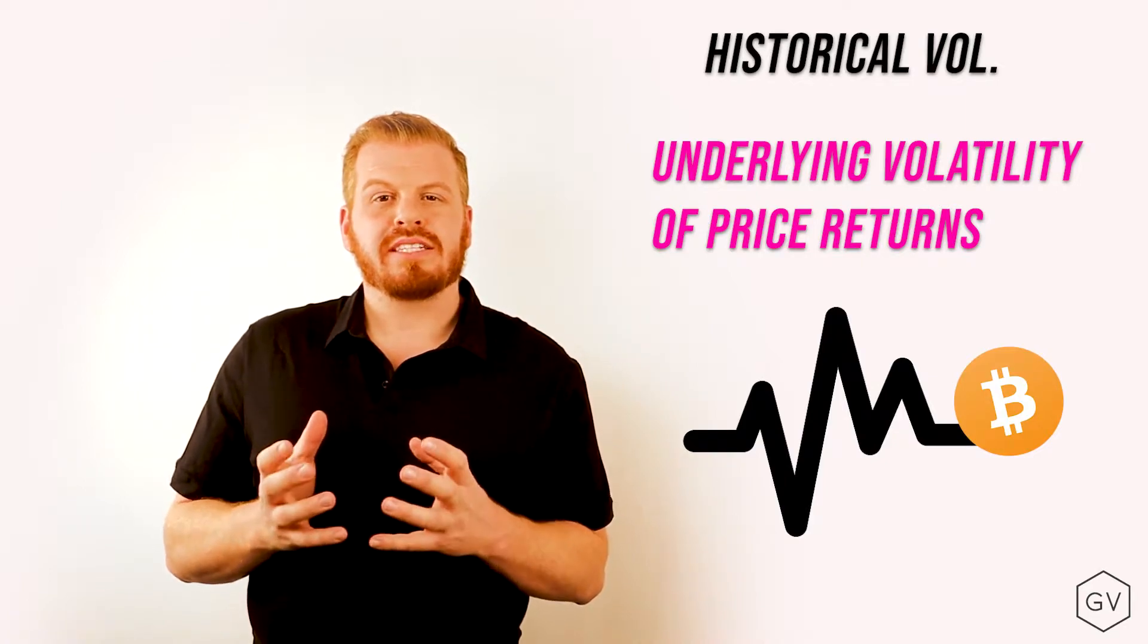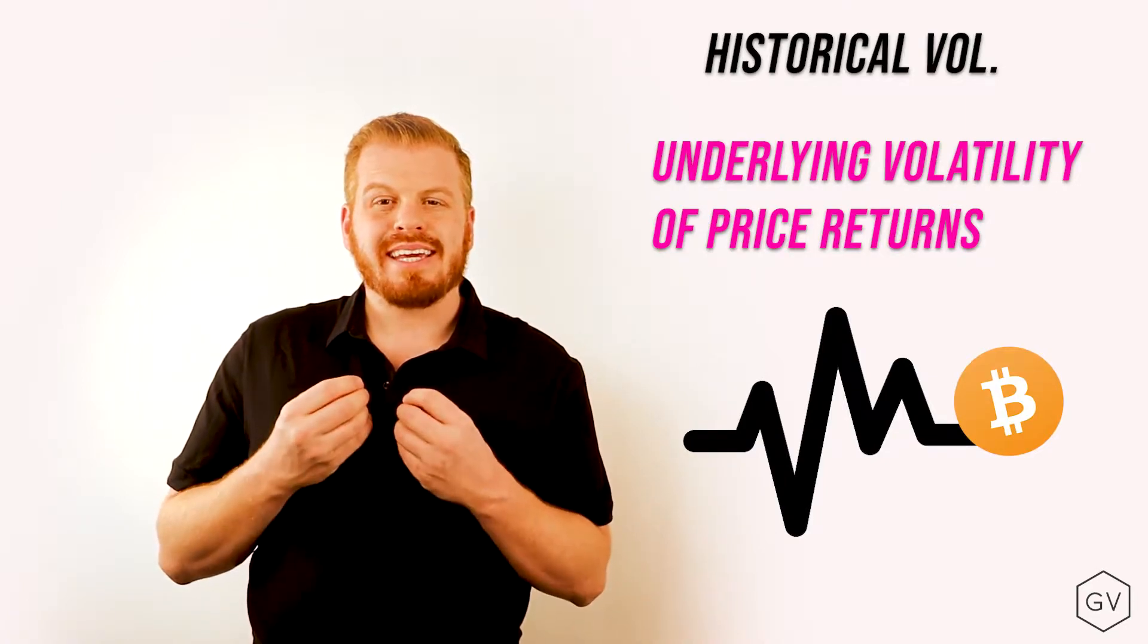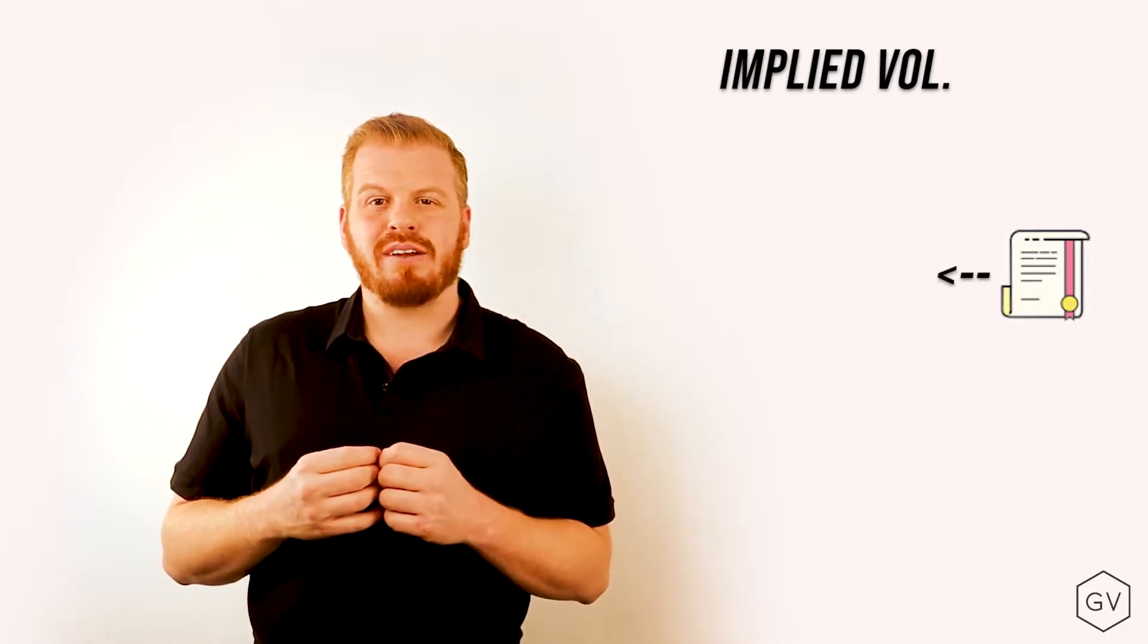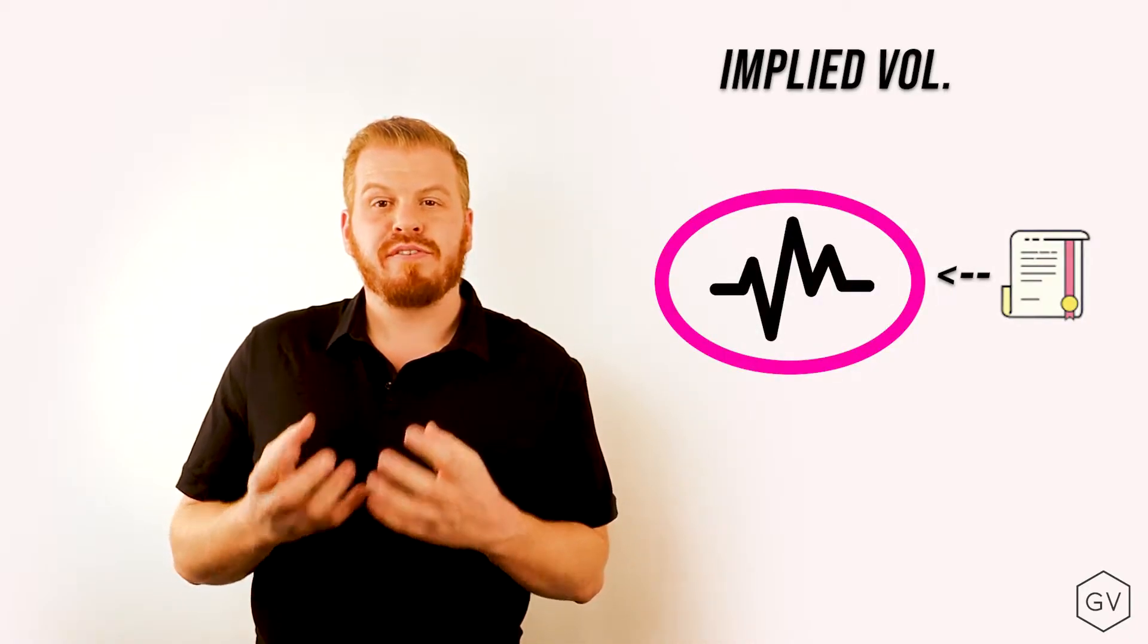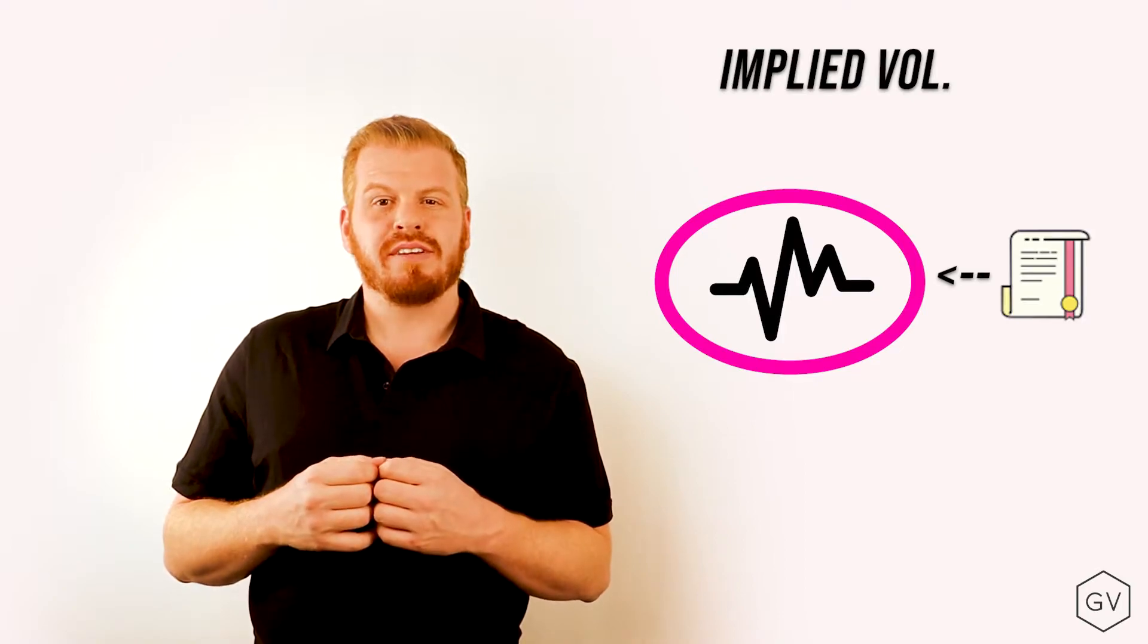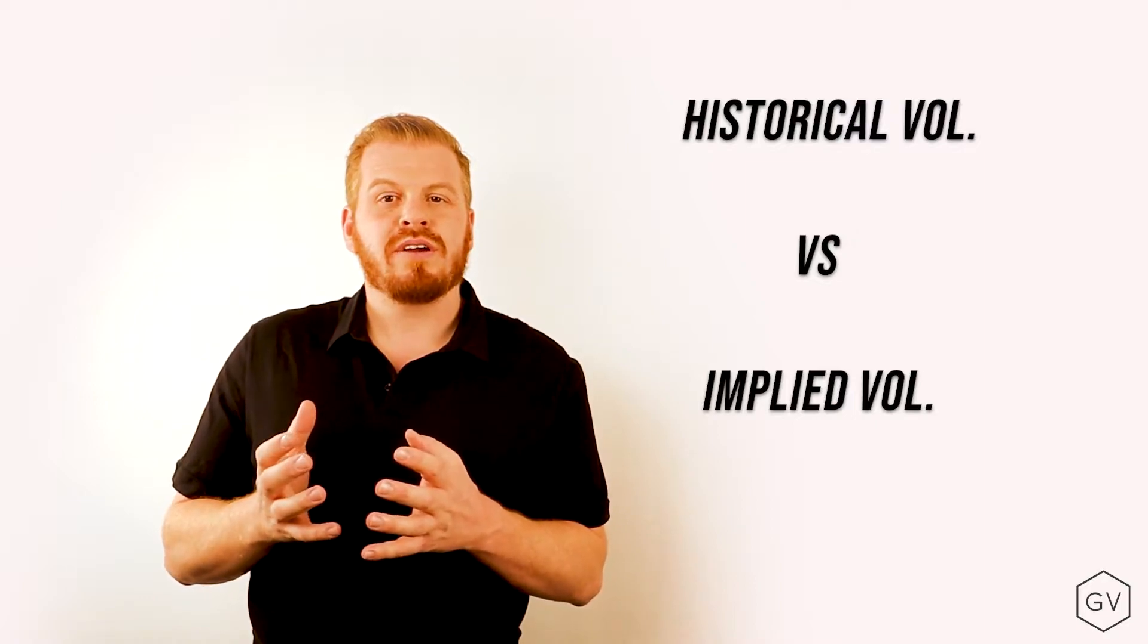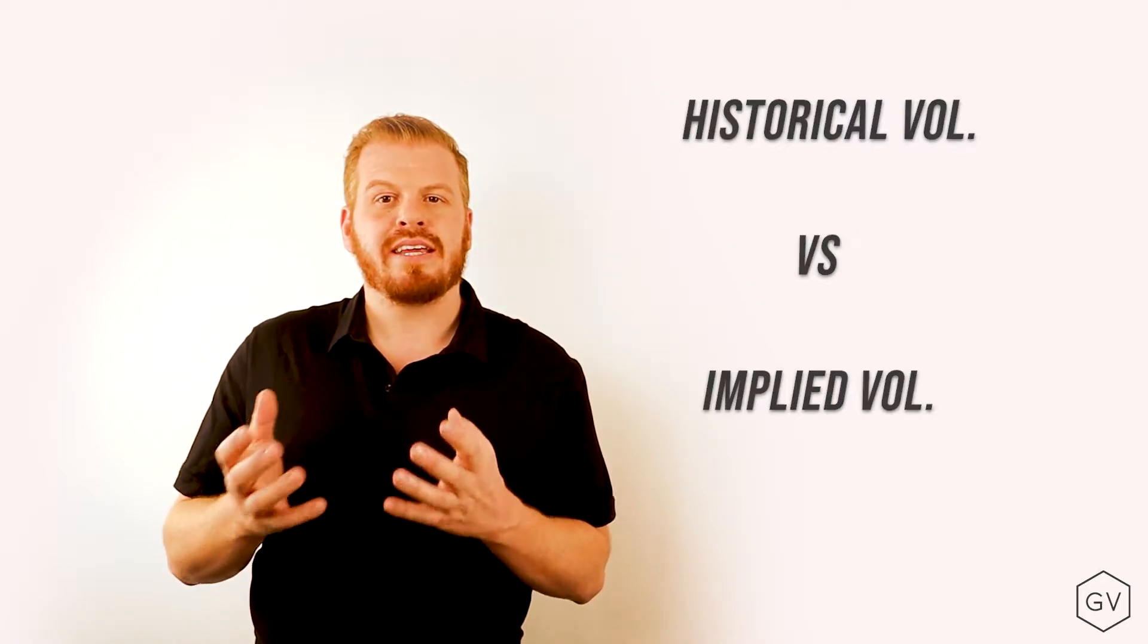One of the important things about the Black-Scholes formula is that it calculates the implied volatility. The implied volatility is the options market's best estimate or current market price estimate of the future realized volatility of the underlying asset. This is why calculating Realized Volatility is so important. It gives us really good context around how volatile the asset can be and whether the options market's estimate is in line or not.